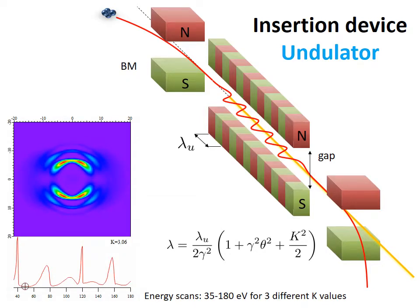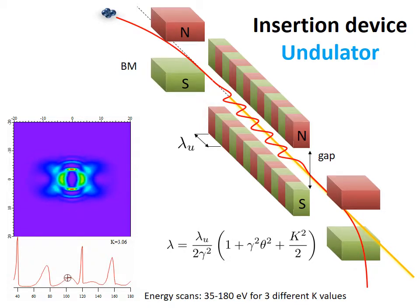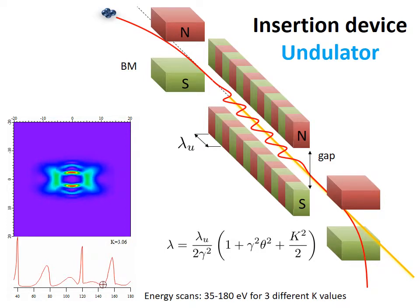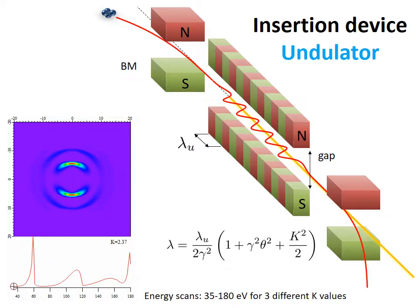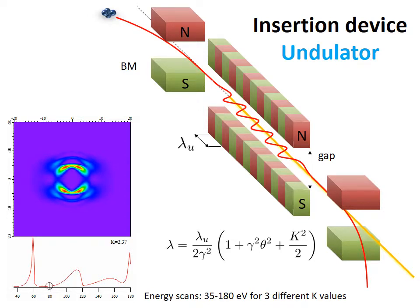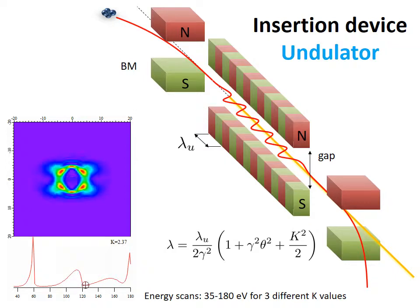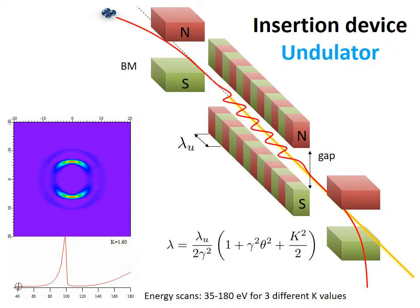The undulator consists of small pieces of magnets along the electron orbit to produce coherent radiation. The wavelength of the undulator radiation primarily depends on the length of the magnetic period over the electron energy described in gamma. It also depends on the k-parameter, which is related to the magnetic field strength and can be varied with the gap of the magnets below and above.